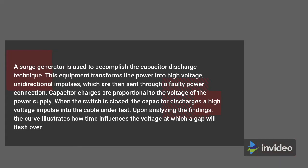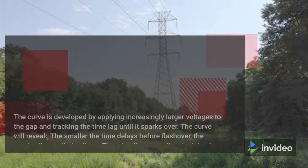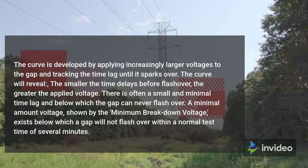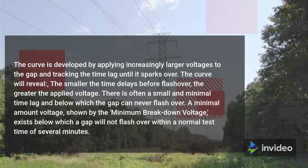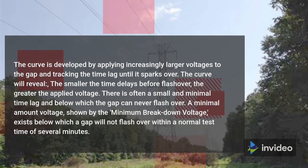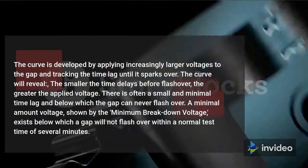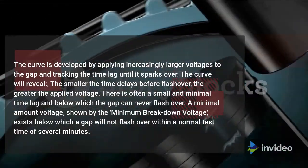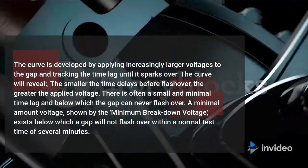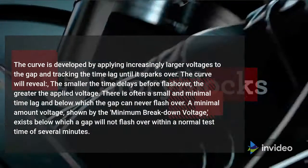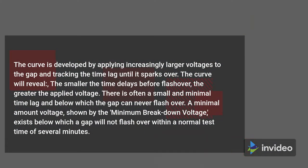Upon analyzing the findings, the curve illustrates how time influences the voltage at which a gap will flash over. The curve is developed by applying increasingly larger voltages to the gap and tracking the time lag until it sparks over. The curve will reveal that the smaller the time delays before flashover, the greater the applied voltage. There is often a minimum time lag below which the gap can never flash over, and a minimum breakdown voltage below which a gap will not flash over within a normal test time of several minutes.